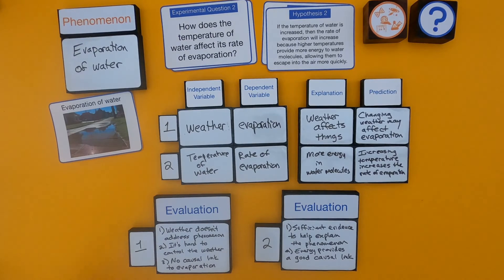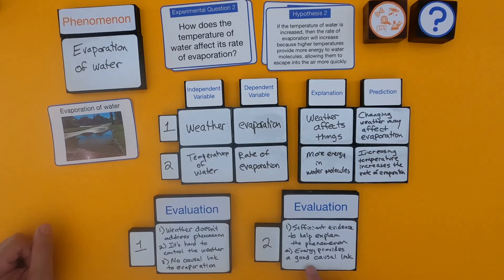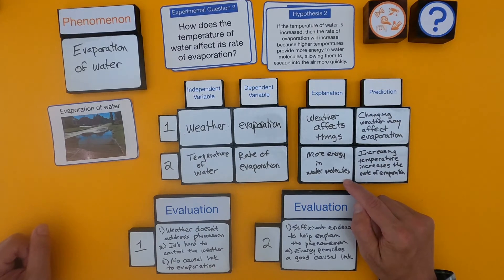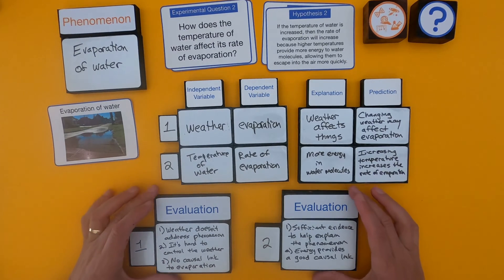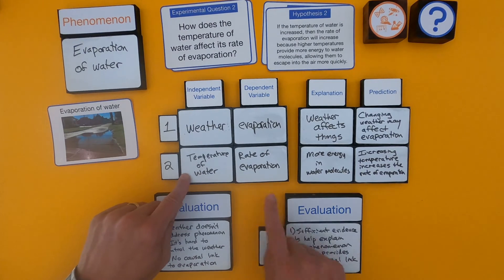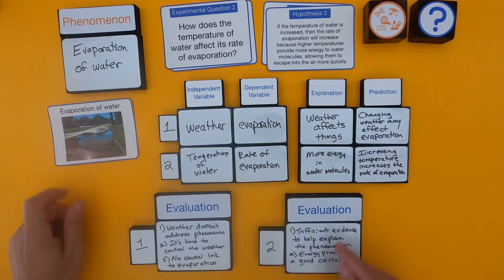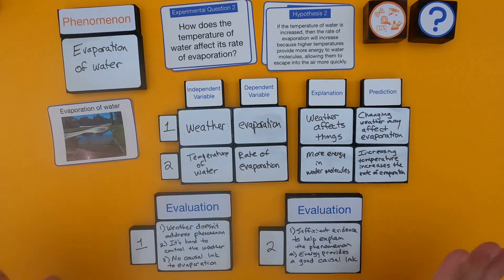For student two, pretty much everything that was missing in student one is found here. They have sufficient evidence — temperature and evaporation — to help explain evaporation, and they provide a nice causal link using energy that explains their prediction. A good question should have variables that address the phenomena, an explanatory portion to the hypothesis, and then a prediction. Let me clean this up and then you'll have a chance to evaluate some questions on your own.